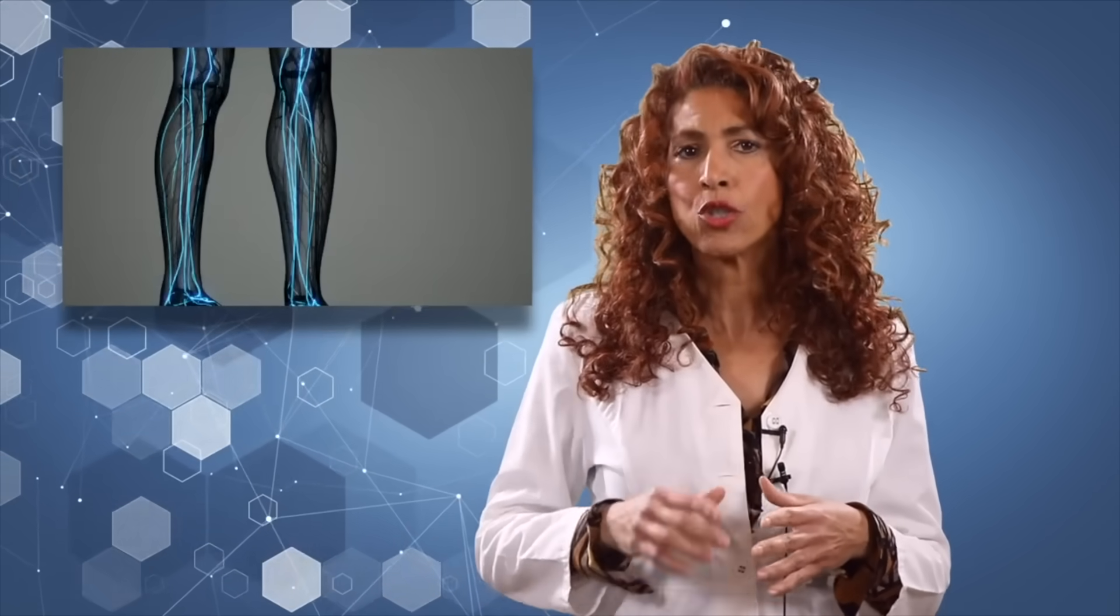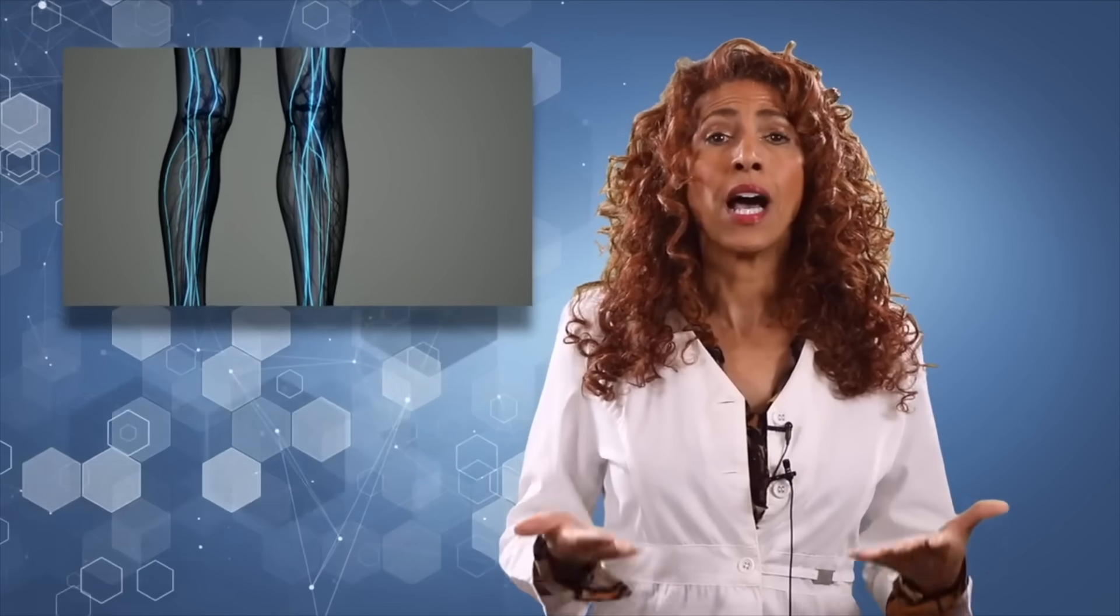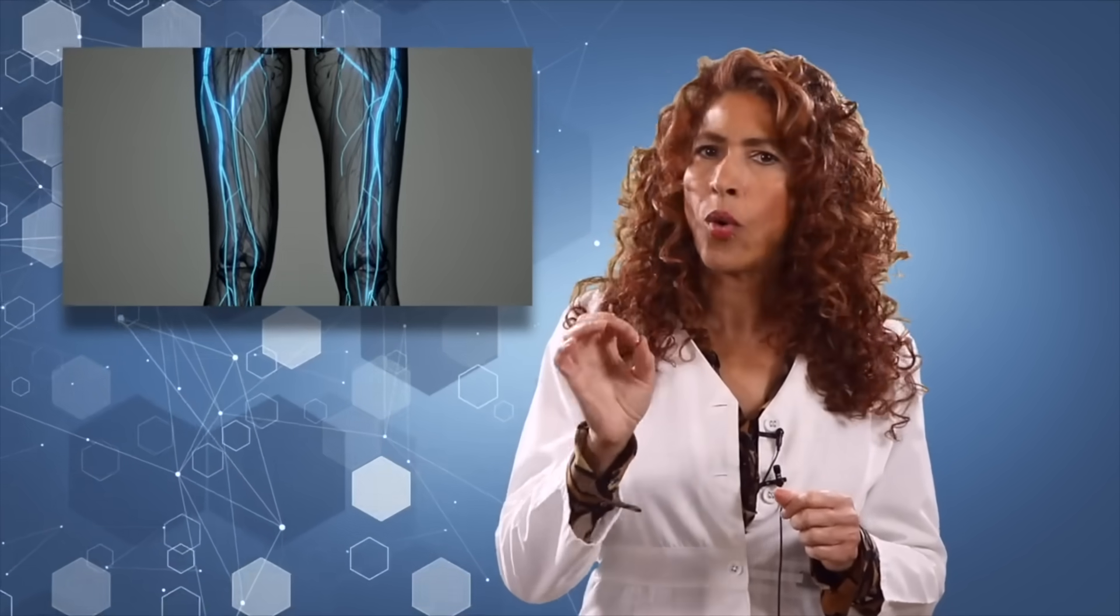Small nerve fiber damage initially begins with symptoms occurring in both feet, usually in the soles. Then as the condition worsens, these symptoms will spread up the leg. As the nerves of the calves are damaged, it's quite common for people to also begin experiencing symptoms that now occur in the hands or in the arms as well.